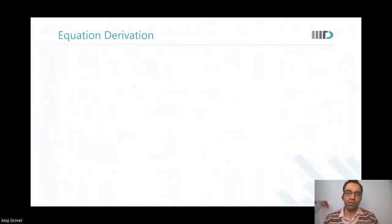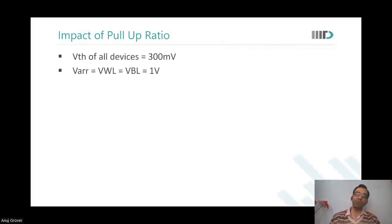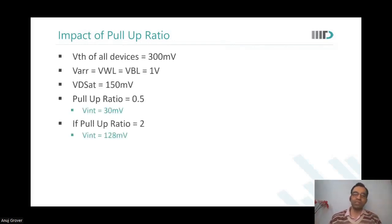So now with that equation, we again do the same kind of variations. What is the impact of pull-up ratio? And you will see that when pull-up ratio is very high or when pull-up ratio goes high, then VInt rises. It means I'm not really able to write into the memory cell.